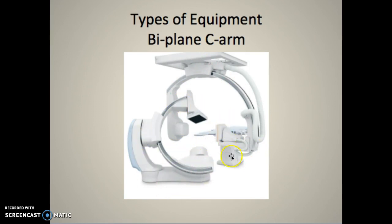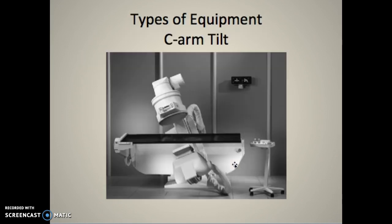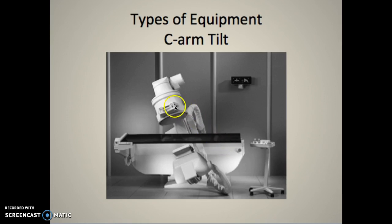You have to be really good at driving biplane tables - it gets very confusing. If you're working at a center with a biplane and can drive these tables well, you're going to have a lot of work. Tilt C-arm positioners are a modified C-arm equipped to perform both general R&F and more complex angio or interventional procedures. We used one of these at Mission for LPs and arthrograms - it was nice because it angled, so the tube would angle rather than the whole unit, which helped a lot when getting in on an LP.